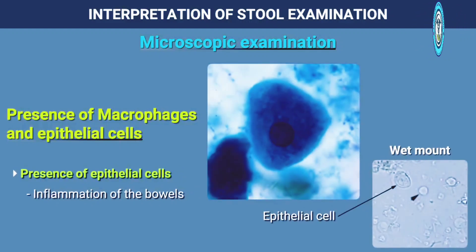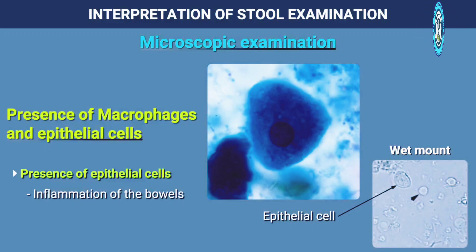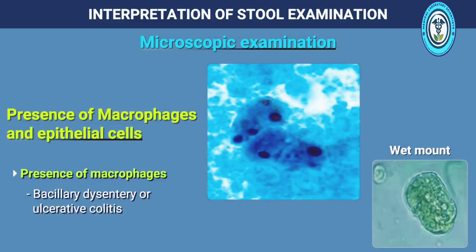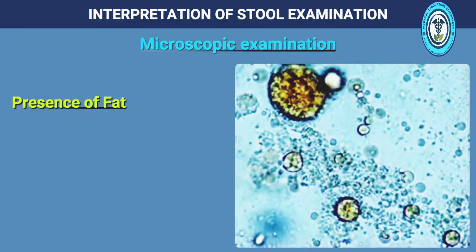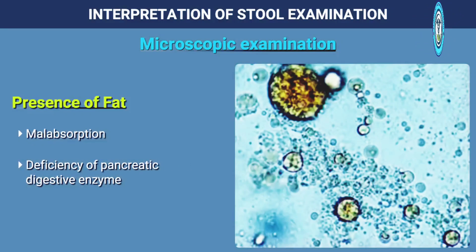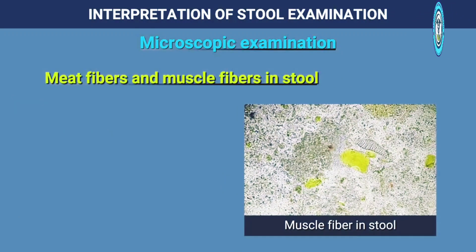Presence of epithelial cells is indicative of inflammation of the bowels. Presence of macrophages is indicative of bacillary dysentery or ulcerative colitis. Fat in stool shows the possibility of malabsorption, deficiency of pancreatic digestive enzymes, or deficiency of bile. Meat fibers and muscle fibers are also seen in stool.